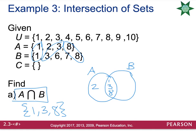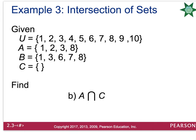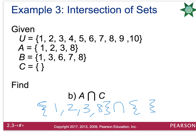Set A also has a 2, but it is not included in B, so we'd put that on the exterior of the circle. Set B also has a 6 and a 7. And the universal set also has 4, 5, 9, and 10, which should all go in the rectangle as well. If I asked you for A intersection C, and C is the empty set, then C has no items in it at all. Set A has {1, 2, 3, 8} and set C has nothing. What do the two sets have in common? Nothing. So the intersection here would be the empty set.